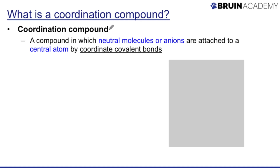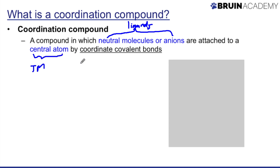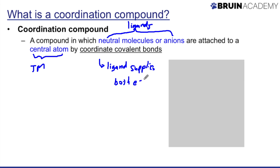There are some terms you need to know. The first is ligand — these neutral molecules or ions are called ligands. They're attached to the central atom, which is always going to be a transition metal, abbreviated TM. The bonds that connect them are called coordinate covalent bonds, which differ from regular covalent bonds in that the ligand supplies both electrons to create the bond.